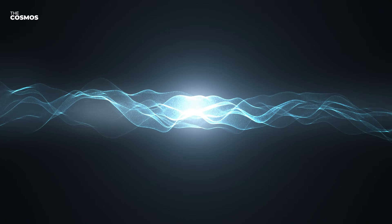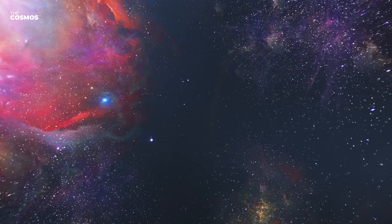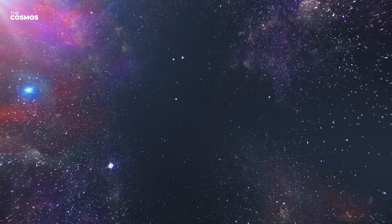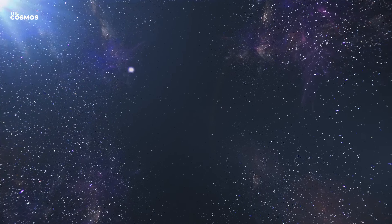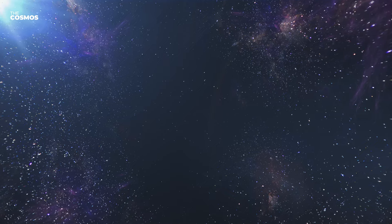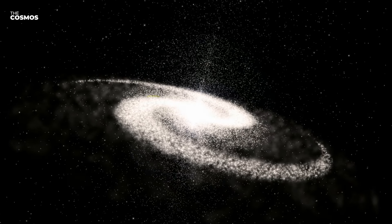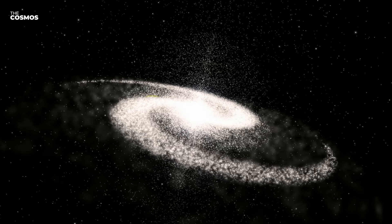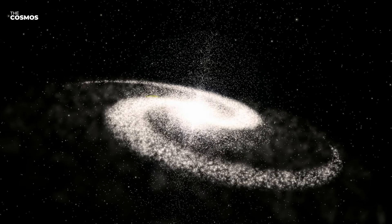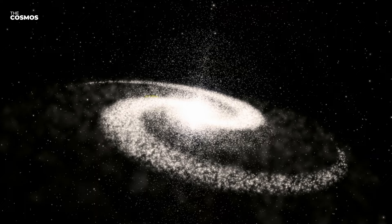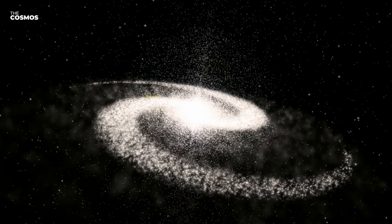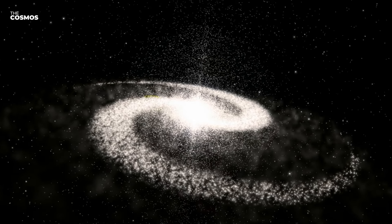The Big Crunch scenario brings with it a philosophical reflection on the cyclical nature of the universe. It suggests a cosmos where endings and beginnings are intertwined, where the destruction of one universe could lead to the creation of another. This idea of a cyclical universe, dying only to be reborn, adds a poetic dimension to our understanding of the cosmos.